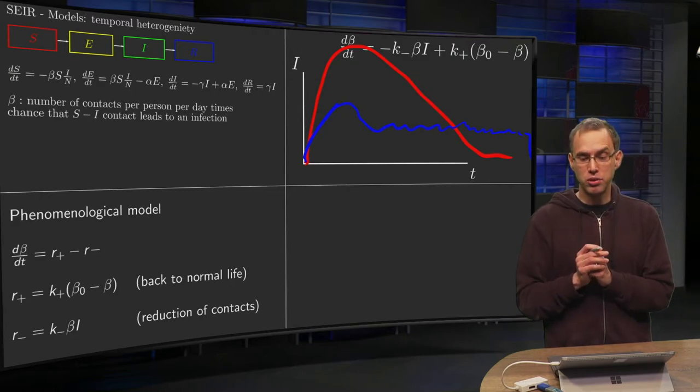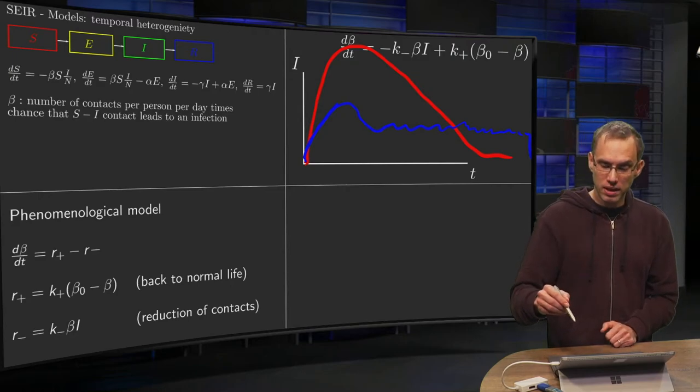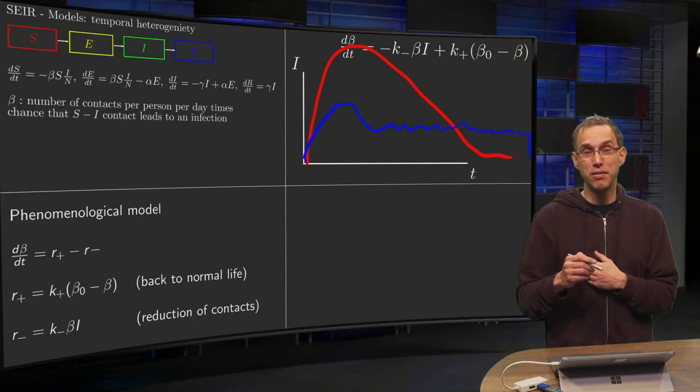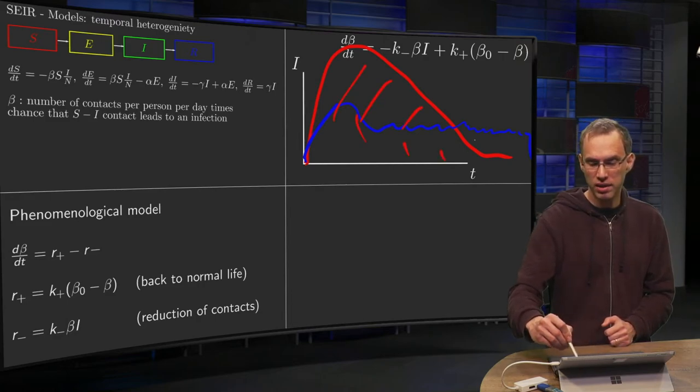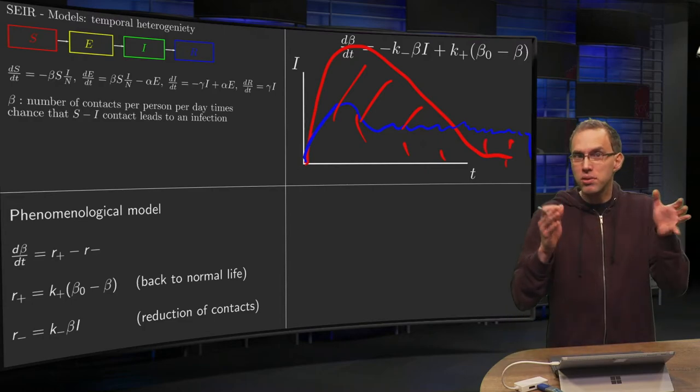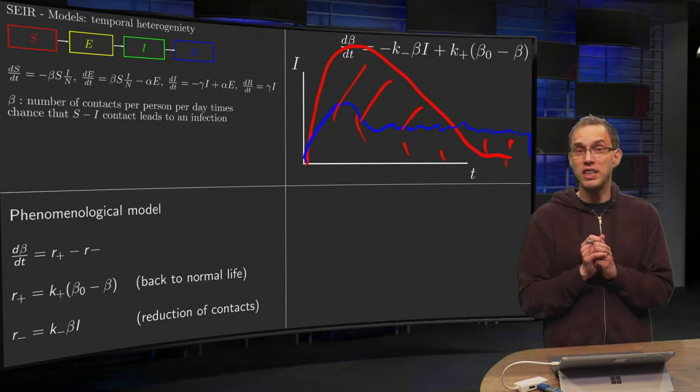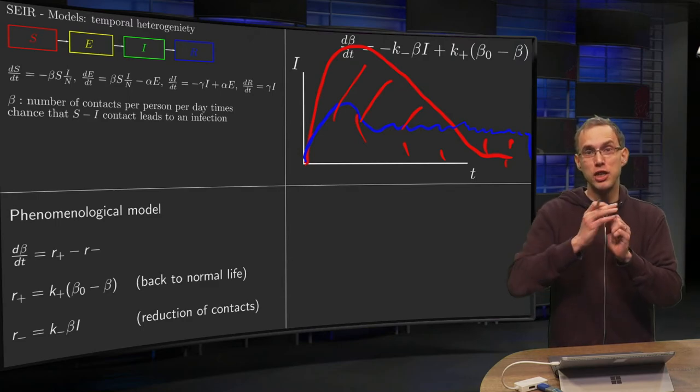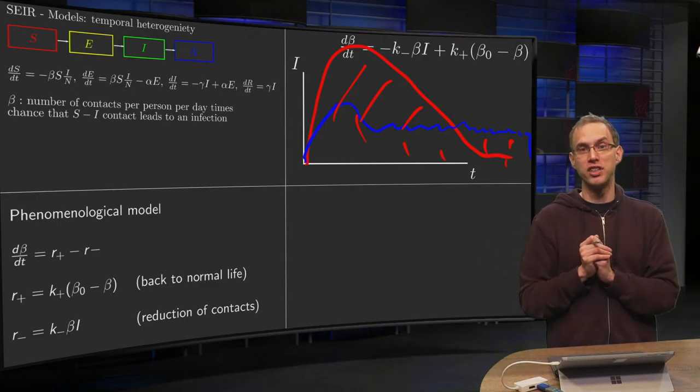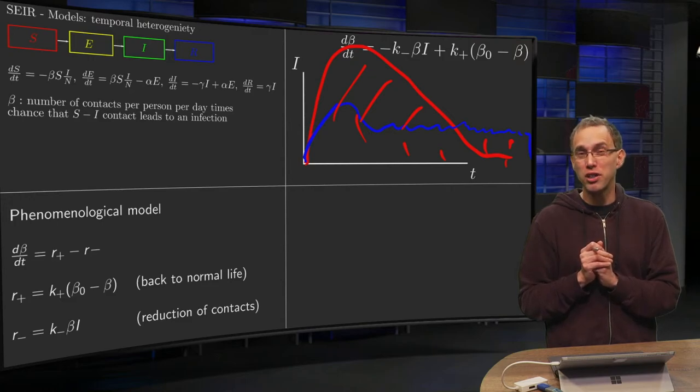The total number of infections over time—the area below the curves—does not change. The only thing you're doing by decreasing beta is spreading the number of infections out over a larger amount of time.